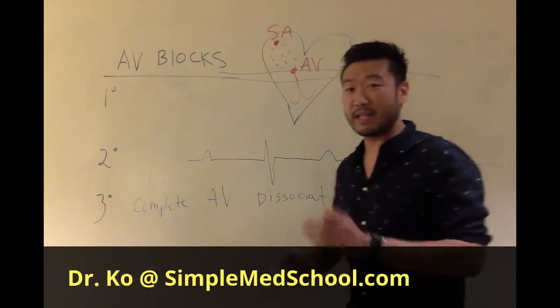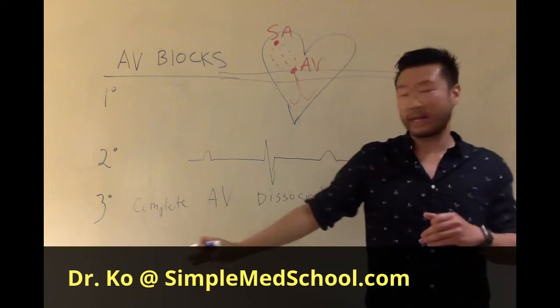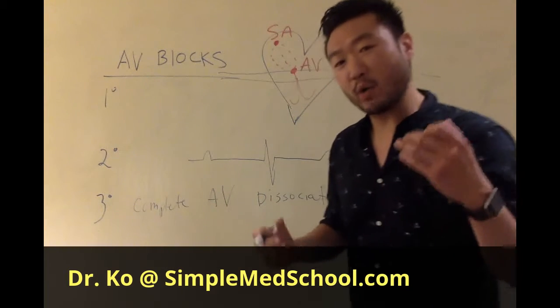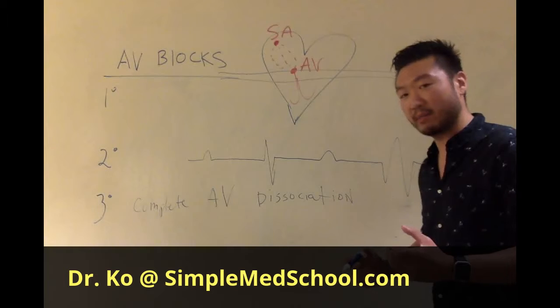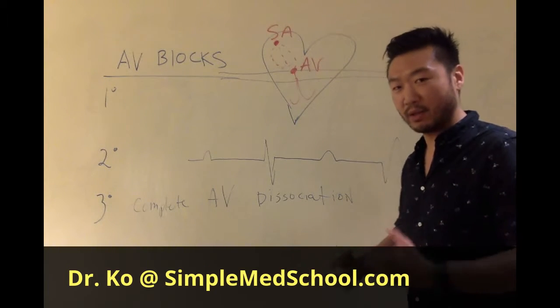So basically, the atria are doing their own thing, the ventricles are doing their own thing. This is actually the most dangerous out of all the AV blocks. I would call it the black belt, third degree black belt AV block.